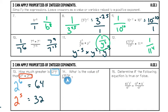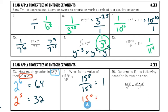Number fourteen: what is the value of (15 to the fourth) to the second power, all over 15 to the eighth power? Using the power rule on top: four times two is eight, giving 15 to the eighth over 15 to the eighth. Anything divided by itself equals one. You could also use the quotient rule: 8 minus 8 equals zero, and anything to the zero power equals one. Either way, the answer is one.